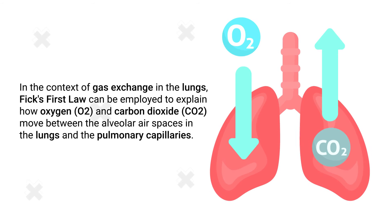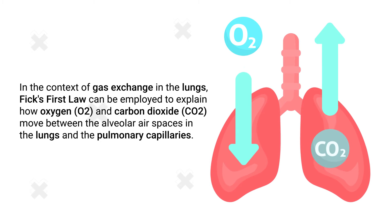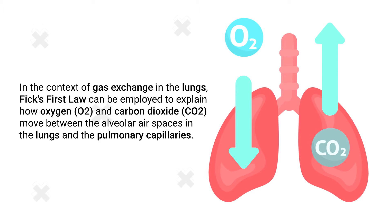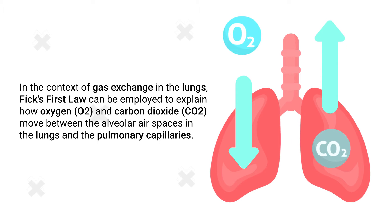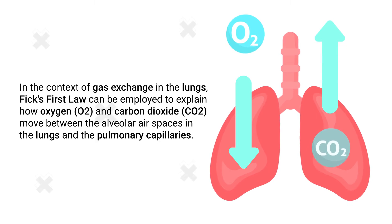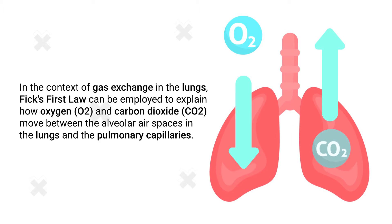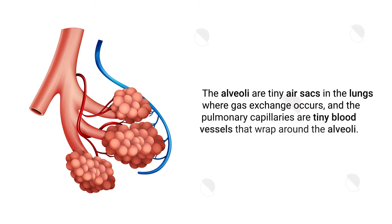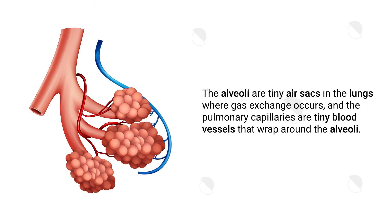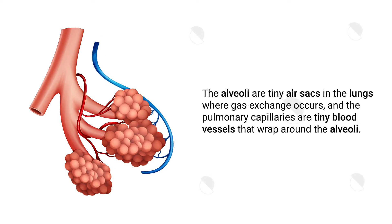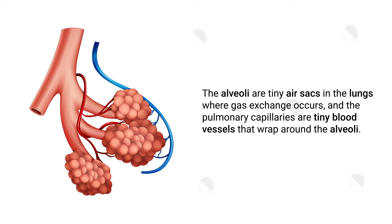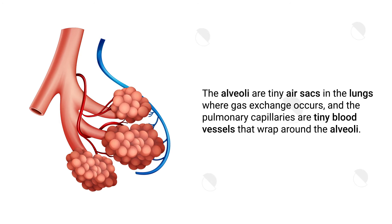In the context of gas exchange in the lungs, Fick's first law can be employed to explain how oxygen and carbon dioxide move between the alveolar air spaces in the lungs and the pulmonary capillaries. The alveoli are tiny air sacs in the lungs where gas exchange occurs, and the pulmonary capillaries are tiny blood vessels that wrap around the alveoli.